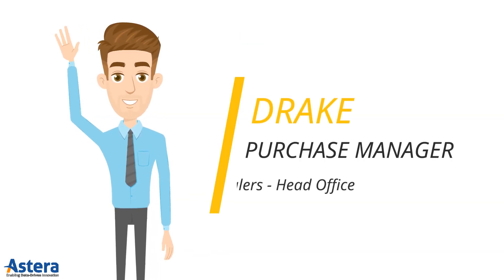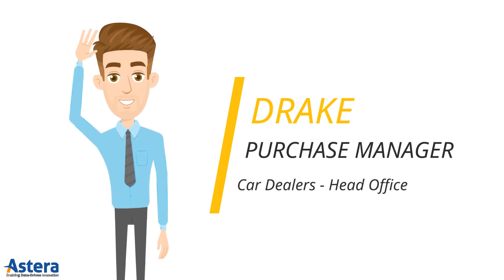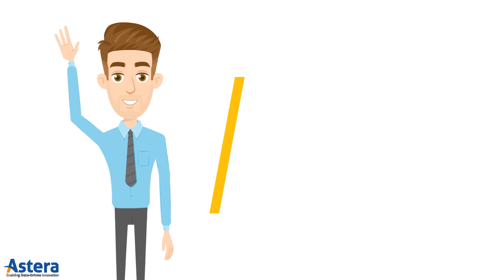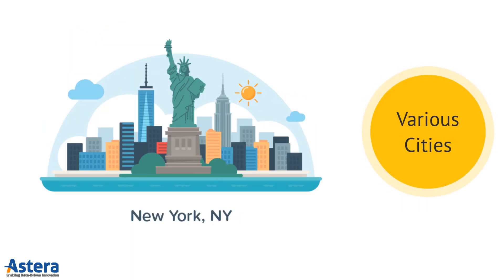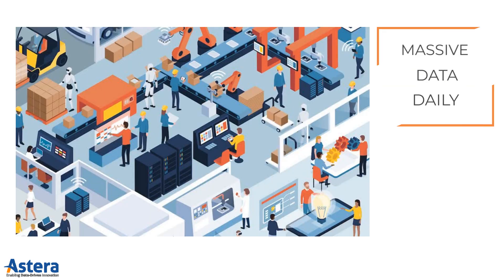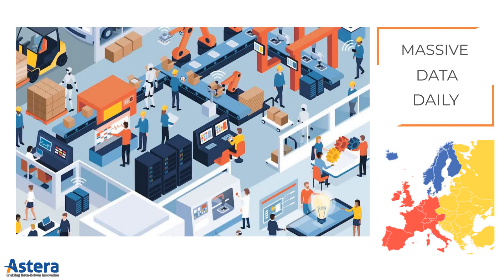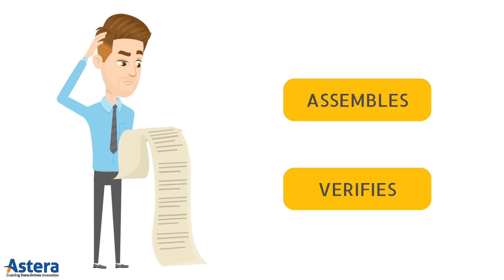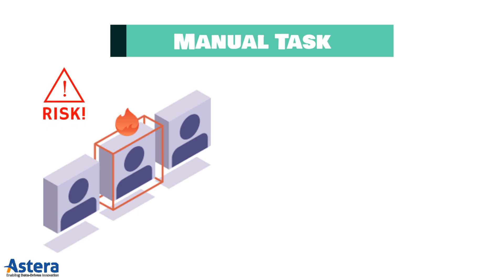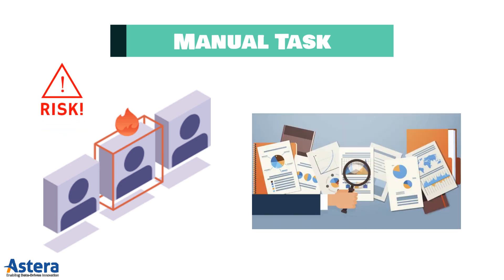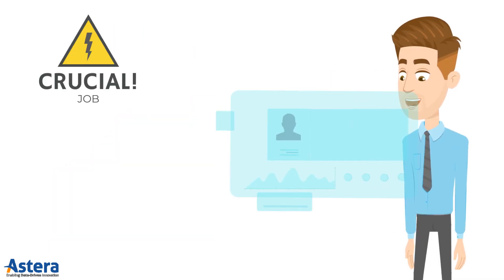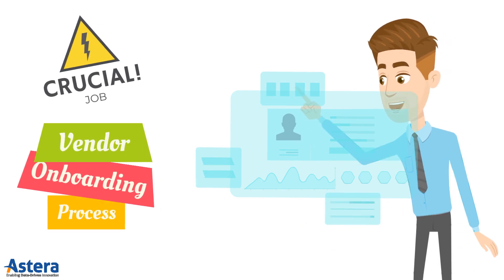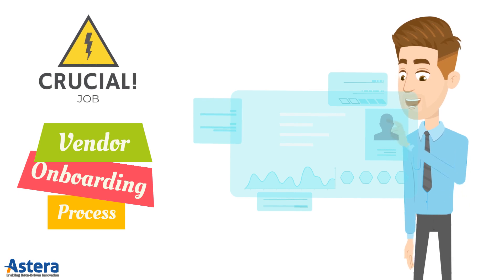This is Drake. He works as a purchase manager in a car dealer company's head office. The company's business spans across various cities, and a massive amount of data from vendors is received at the head office daily from all over the country. Drake manually assembles and verifies the vendor information he receives for onboarding. As with any manual task, the risk of human errors and miscalculations cannot be eliminated. Drake has a crucial job since the entire vendor onboarding process relies on whatever data he assembles.